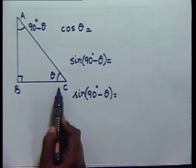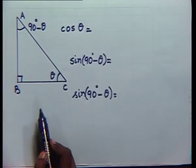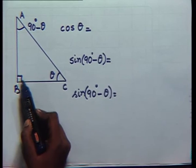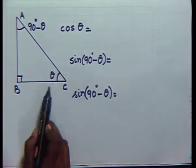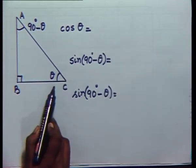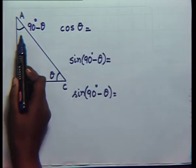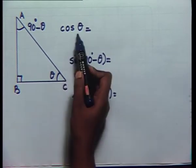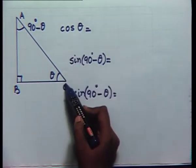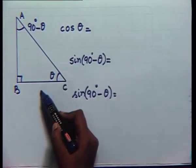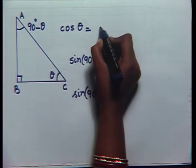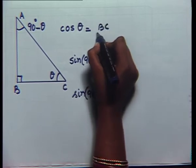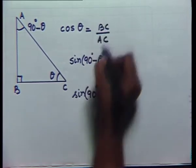Here is a right angle triangle right angled at B. So angle B is 90 degrees. If you take this angle C as theta, then what will be angle A? It will be 90 minus theta. Now, we know that cos theta is equal to the adjacent side upon hypotenuse, which in this case will be equal to side BC upon AC.